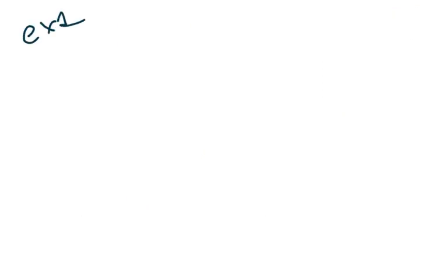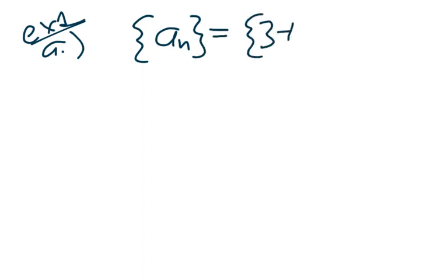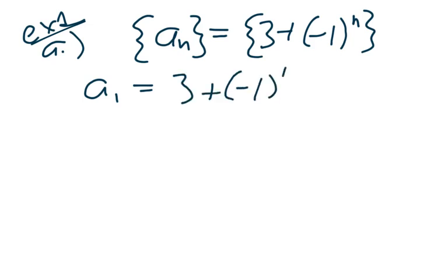Just example 1. 1a says that our sequence, a sub n in curly braces, is defined as 3 plus negative 1 to the n power. Okay, so what does that mean? Let's look at the first term of our sequence. What is a sub 1? Well, a sub 1 is 3 plus negative 1 to the 1 power. Negative 1 to the 1 power is negative 1, so that's 2.